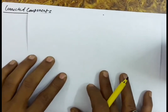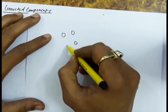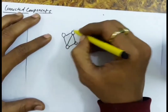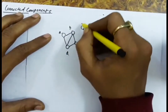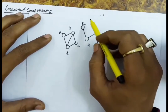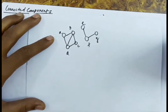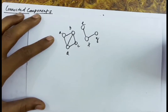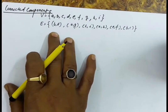We will discuss connected components in this lecture. Given a graph with vertices A, B, C, D, E, F, G, you can see that in the same graph we have two connected components: one is A, B, C, D and another connected component is E, F, and G. Given a graph, we have to find out what are the different connected components in the graph.